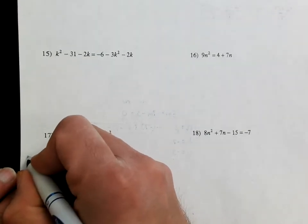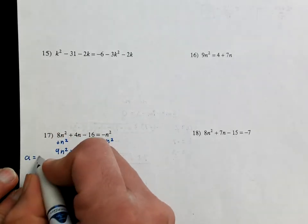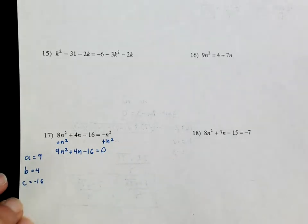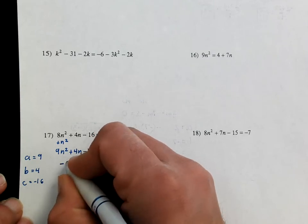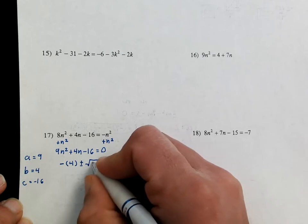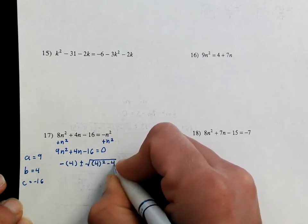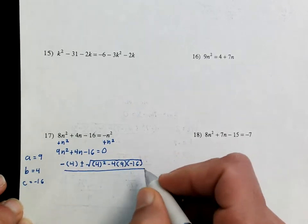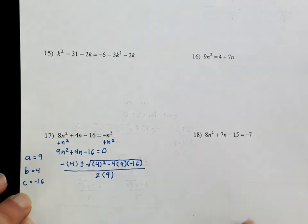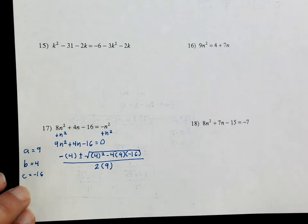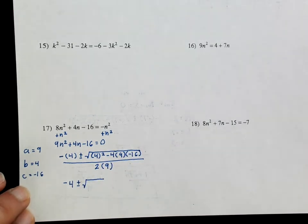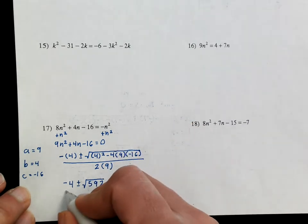Now again, a is 9, b is 4, and c is negative 16. So we have the formula: negative b plus or minus the square root of b squared minus 4ac, all over 2 times a, which is 9. Make sure you do this part in your calculator so you can see what you get. So this is going to be negative 4 plus or minus the square root — I've already done this in the calculator ahead of time — and you get 592 over 18.